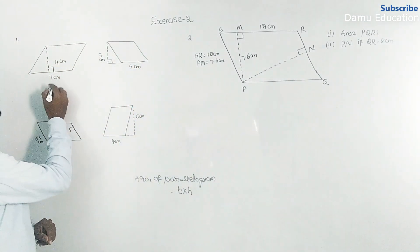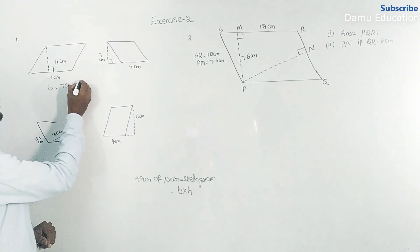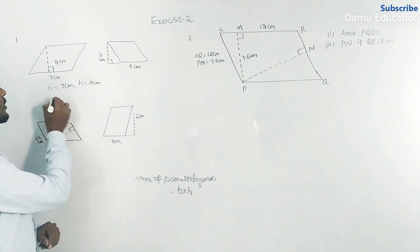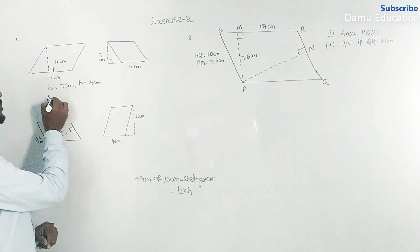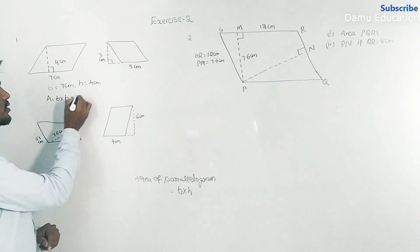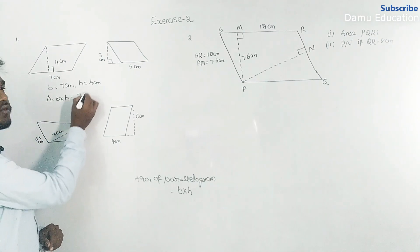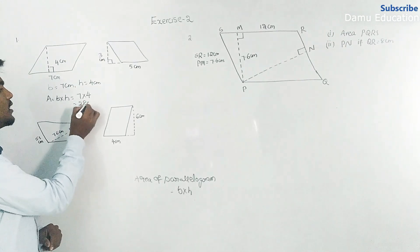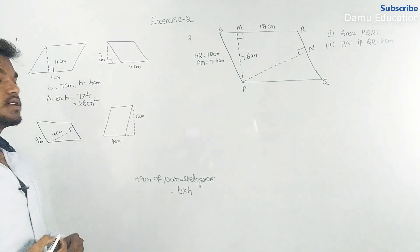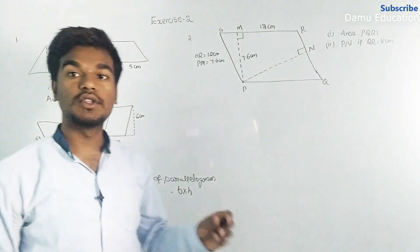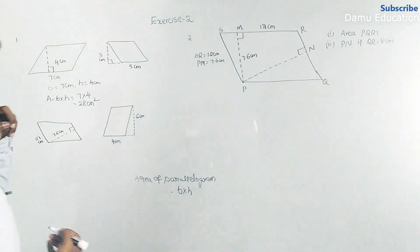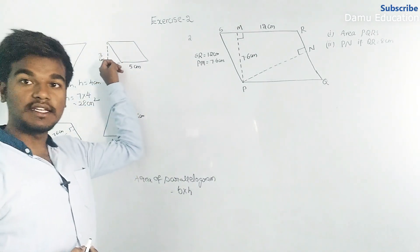For the first question, base b equals seven centimeters and height equals four centimeters. Area equals base into height, that is seven into four, which equals 28 centimeters square.